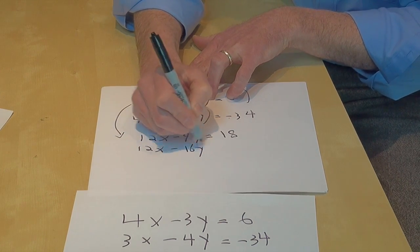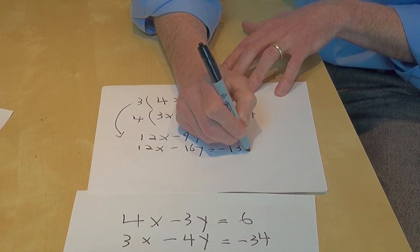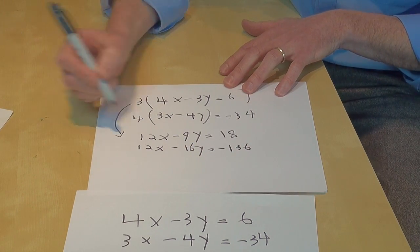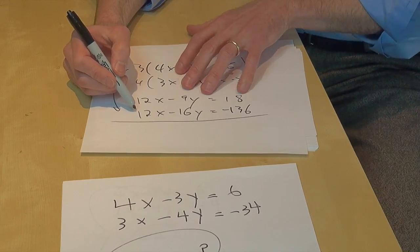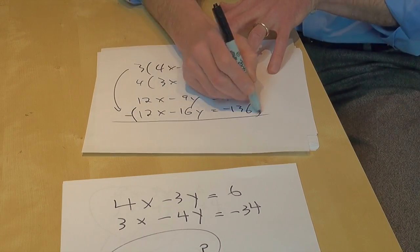12x minus 16y equals 4 times negative 34, which is negative 136. Awesome. So we want to get rid of either the x or the y. We're going to subtract the whole second equation from the whole first.